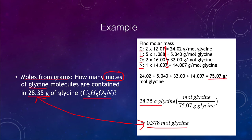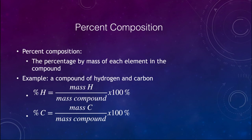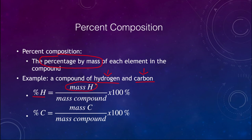The next topic is percent composition of compounds. Percent composition is the percentage by mass of each element in a compound. For example, a compound containing hydrogen and carbon will have some percent hydrogen and the remaining percent carbon. The percentage of hydrogen equals the mass of hydrogen in the compound divided by the overall mass of the compound, multiplied by 100. The same formula applies for carbon.